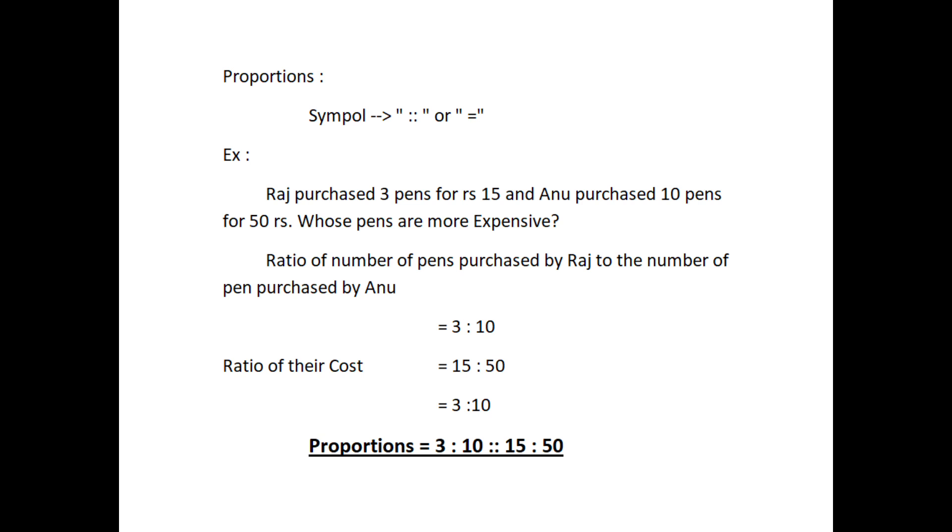For example, Raj purchased 3 pens for Rs.15 and Anu purchased 10 pens for Rs.50. Whose pens are more expensive? Ratio of number of pens purchased by Raj to Anu equals 3 is to 10. Ratio of their cost equals 15 is to 50 which equals 3 is to 10. Both ratios are same. Therefore, the pens were purchased for the same price. In this example, we can say 3, 10, 15 and 50 are in proportions which is read as 3 is to 10 as 15 is to 50.